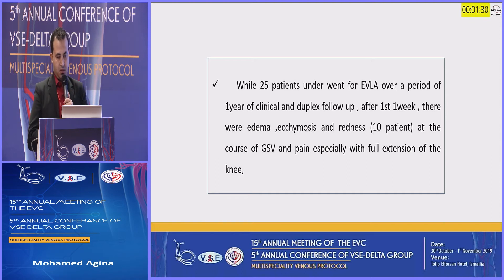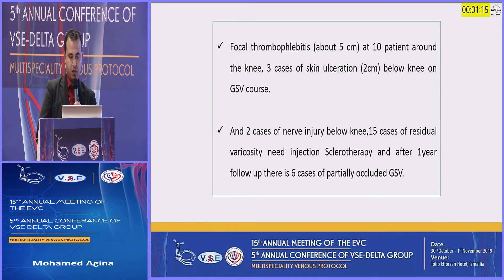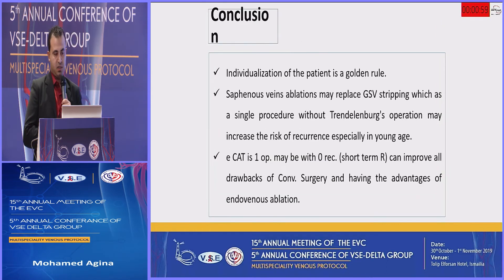25 patients underwent endovenous laser ablation over a period of one year. Clinical duplex follow-up after one week showed mild edema, ecchymosis, redness in 10 patients along the course of the great saphenous vein, and pain especially with full extension of the knee. Focal thrombosis at 10 patients around the knee, 3 cases of skin ulceration below the knee, 2 cases of nerve injury below the knee, and 15 cases requiring varicose vein injection and sclerotherapy. After one-year follow-up, 60 cases showed partial occlusion of the great saphenous vein.